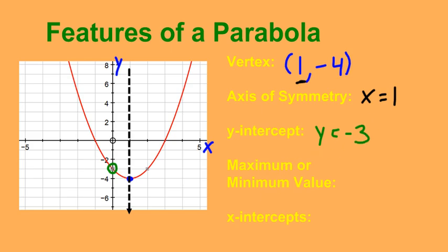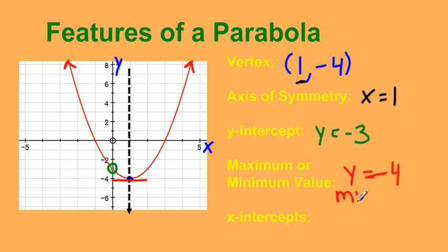Does this parabola have a max or a min? It's opening up and going up forever, so it doesn't have a maximum. The minimum value is at the vertex, which is y equals negative 4 — and notice that is the y-coordinate of the vertex.